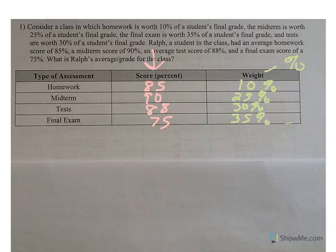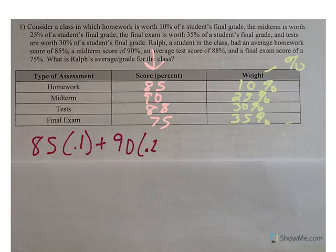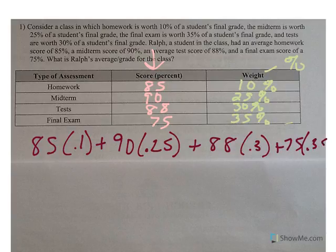So when I'm looking at this and I'm trying to find my average, we're going to say, okay, we've got to figure out, and again, I'm going to use the term quality point. How many quality points does he earn for each type of assessment? Well, to figure out homework, we're going to take 85 times the weight .15. We're going to add to that the midterm times the weight .25. We're going to add that to the test score of 88 times .3, and then the score for the final exam times .35.